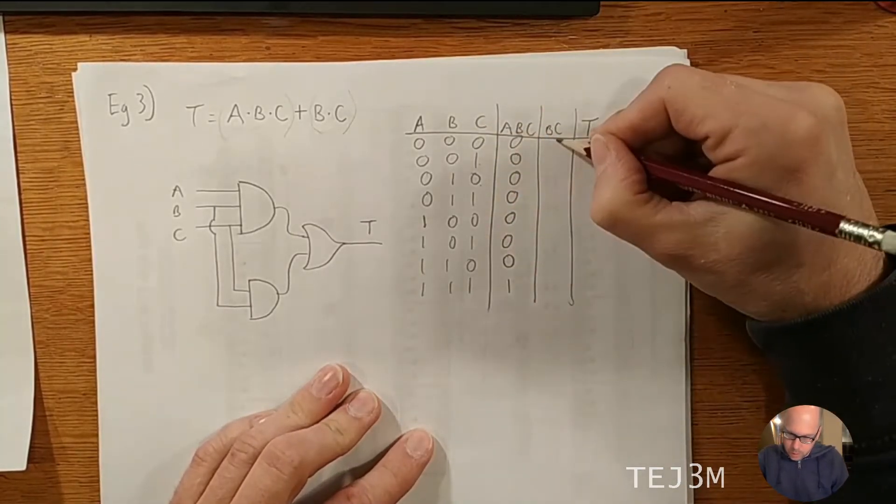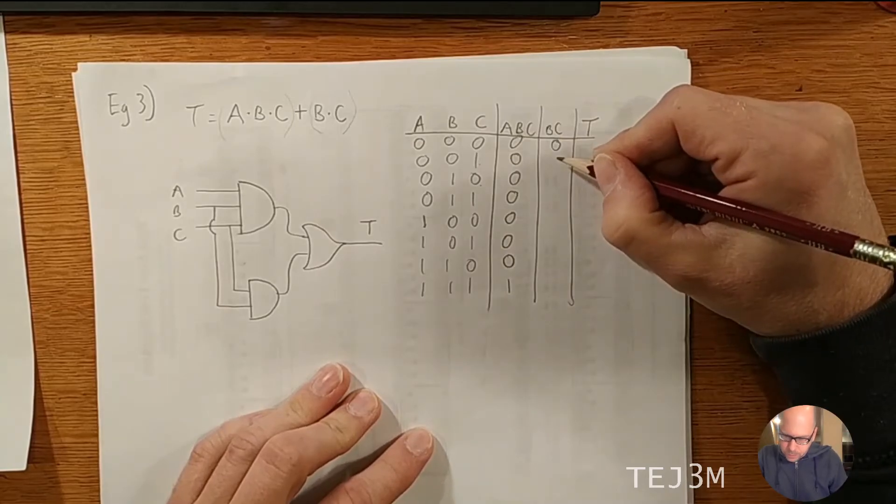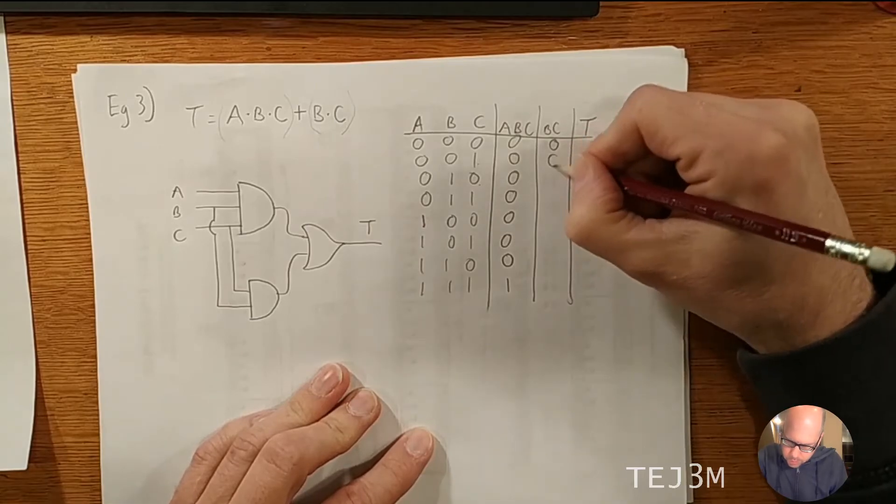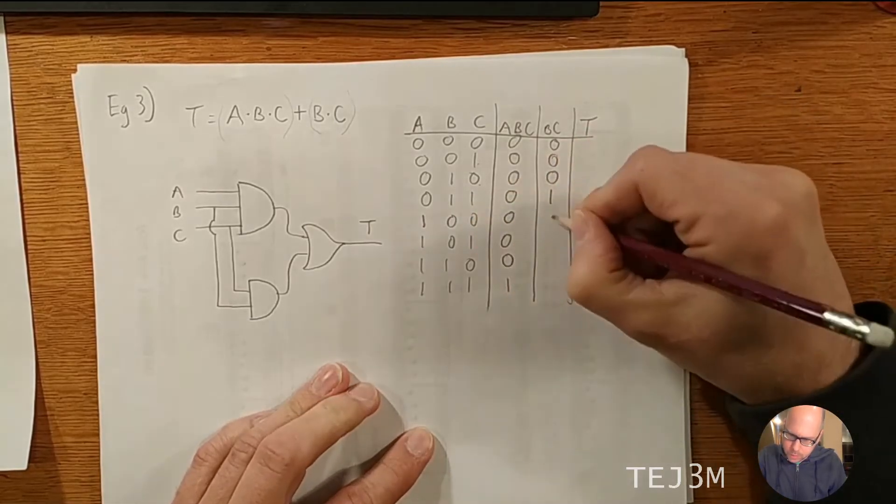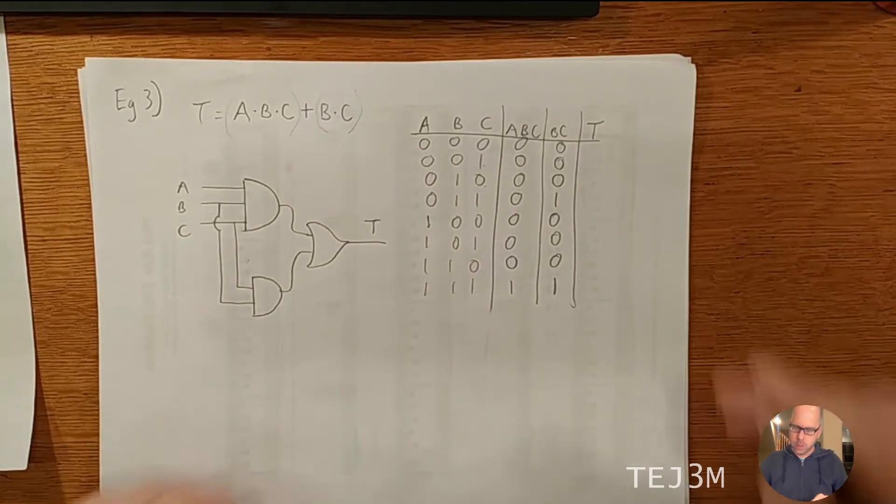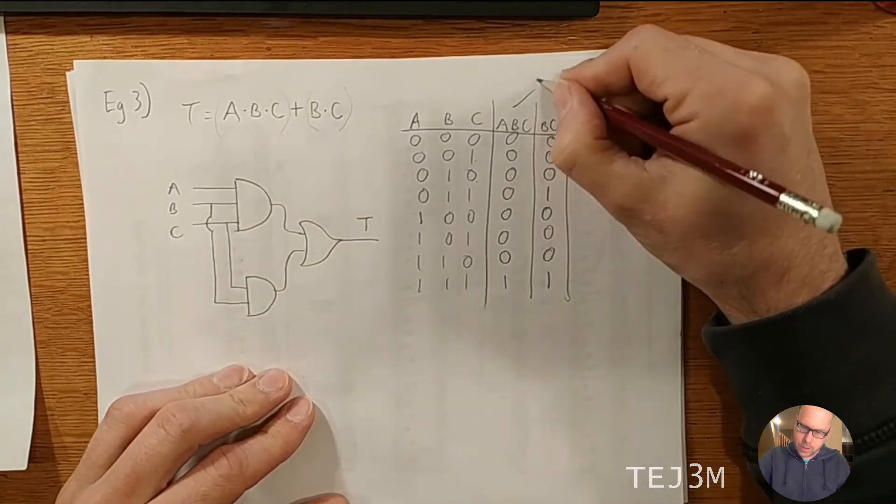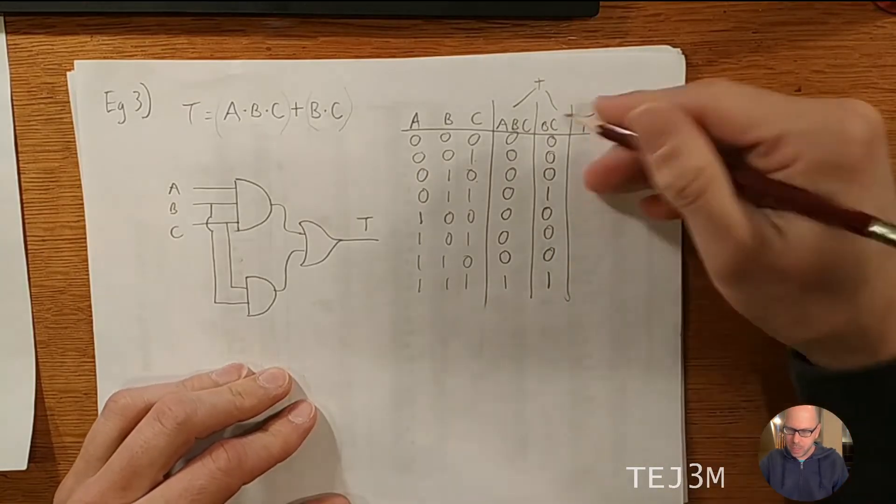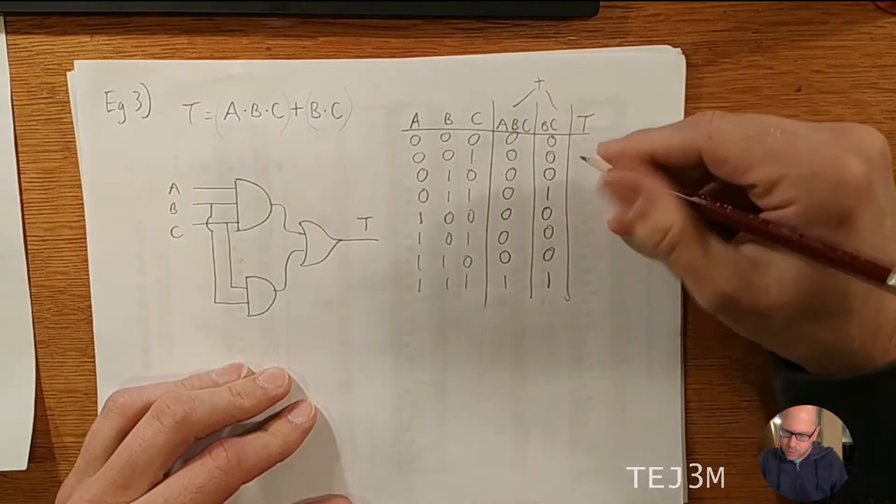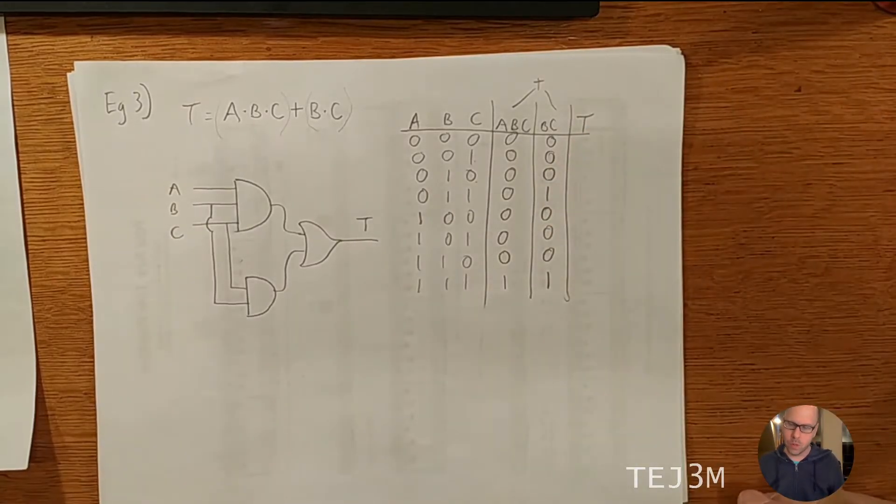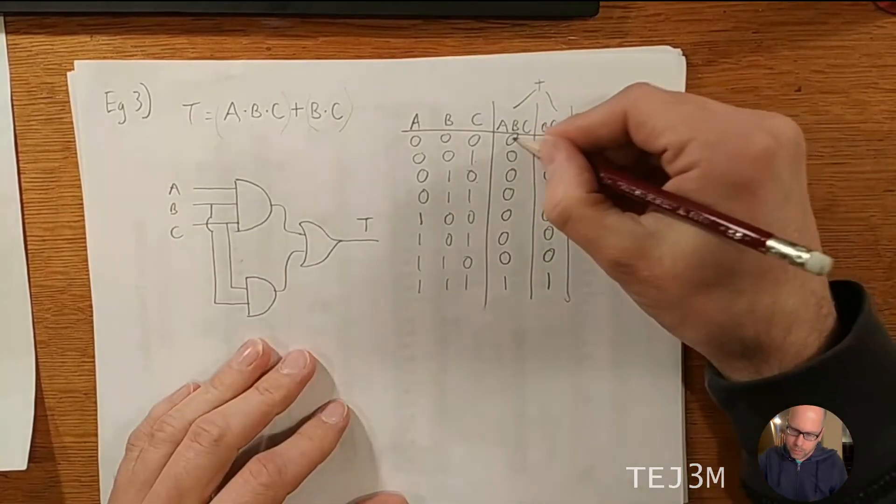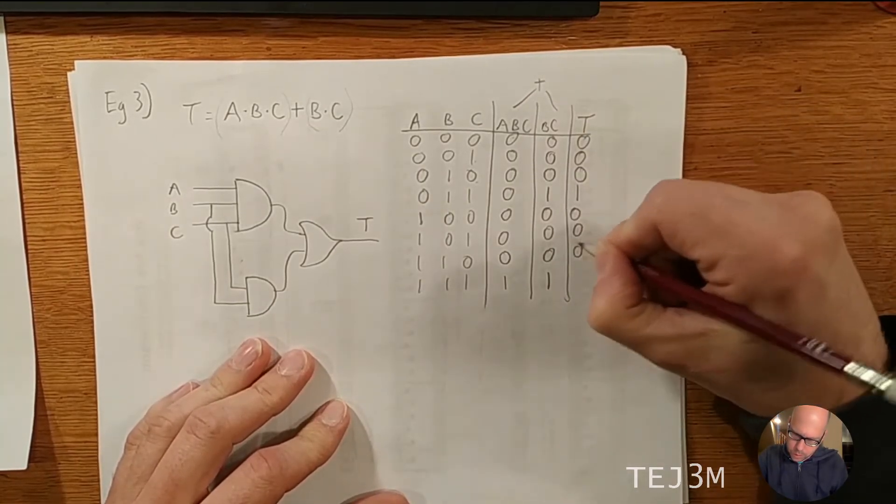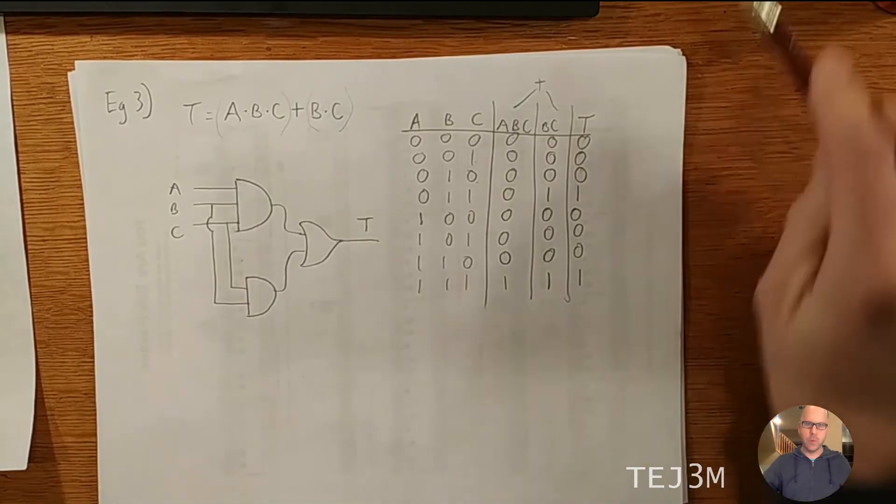B AND C, the only time that we get a one is if both columns B and C are one. So there's a one there, and then there's a one there also. Finally, with T, well, that's the OR. You don't have to show this. I'm just showing it because it might be the first time you're seeing it. So the only time that we're going to get a one for T, actually, the only time we're not going to get a one for T is if both of these columns are zero, which happens quite a bit. But there's one. There's one there. So that's the completed example there.